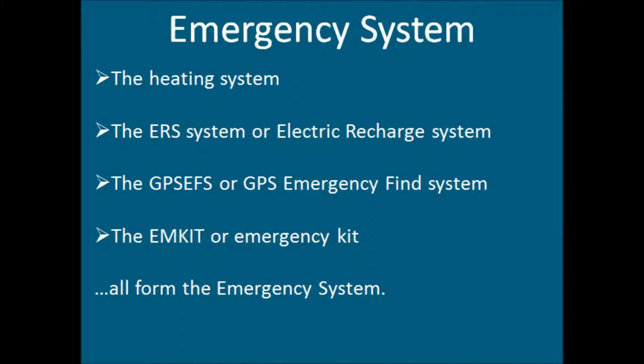There are several different systems that form the emergency system, or ES. They are listed now. The heating system, as explained in the heating section, is a complex network of wires powered by small rechargeable batteries throughout the vehicle. It heats the vehicle and the air inside the cabin so that all functions resume normally and that the driver remains comfortably warm.